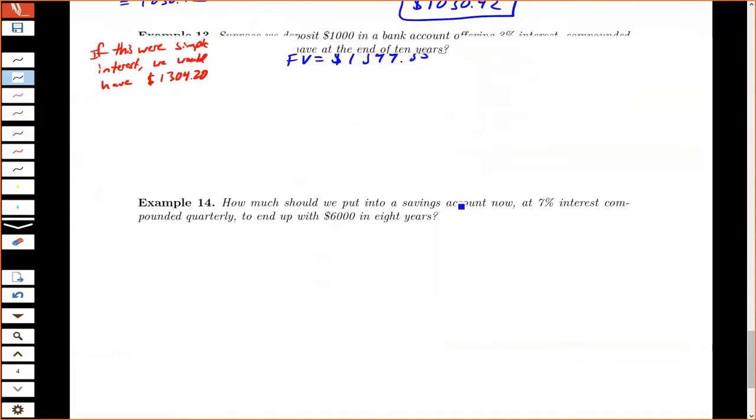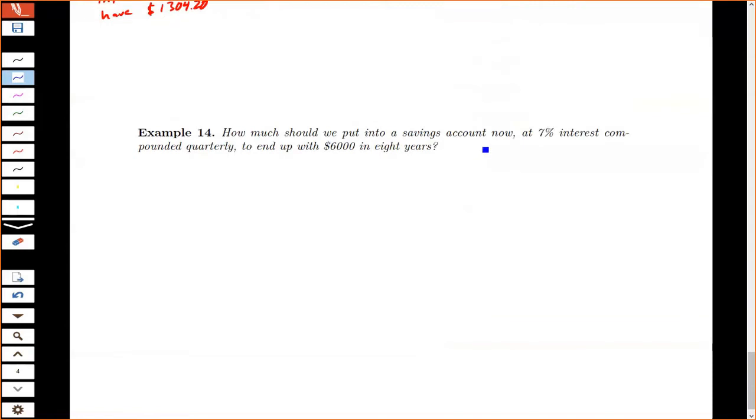All right, let's look at another one. How much should you put into a savings account now? So that's asking me how much to start with. So this is asking me to find P, or the present value. At 7% interest, so my interest rate is 0.07, compounded quarterly, so N is 4.